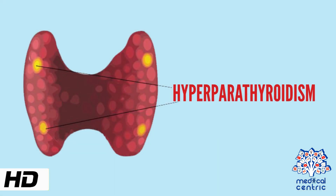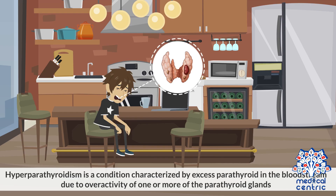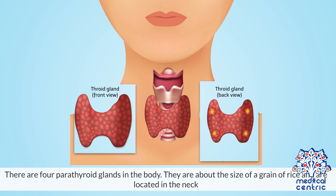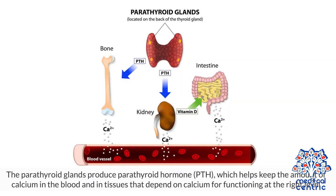Today's topic is hyperparathyroidism. Hyperparathyroidism is a condition characterized by excess parathyroid hormone in the bloodstream, due to overactivity of one or more of the parathyroid glands. There are four parathyroid glands in the body. They are about the size of a grain of rice and are located in the neck. The parathyroid glands produce parathyroid hormone, or PTH, which helps keep the amount of calcium in the blood and in tissues that depend on calcium for functioning at the right levels.